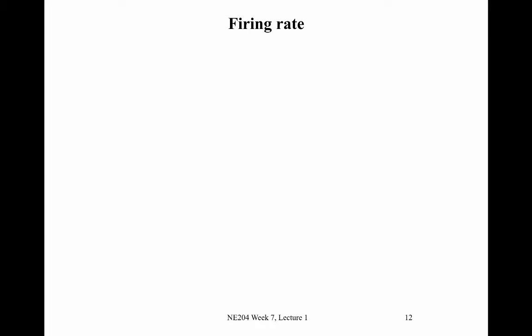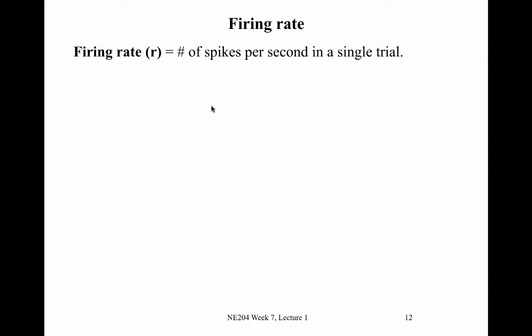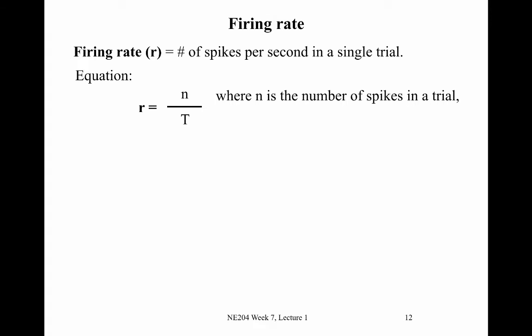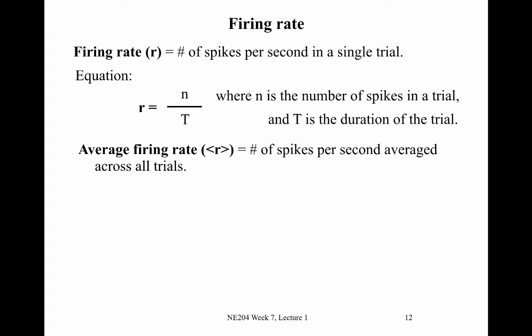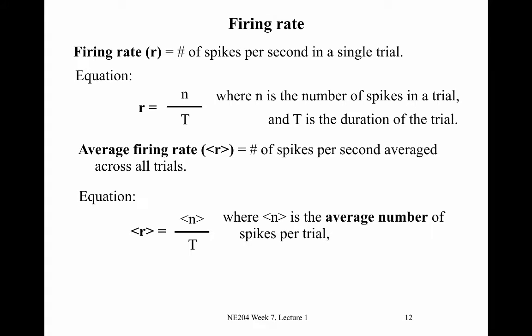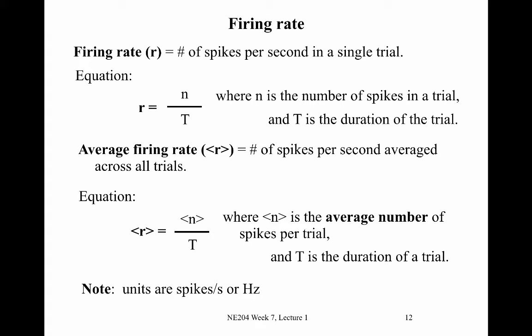The second metric is the firing rate. We define the firing rate, little r, as the number of spikes per second in a single trial: r equals little n over big T, where n is the number of spikes and T is the duration. We also define the average firing rate, written as r in angular brackets, equal to the average number of spikes per trial divided by the total trial duration T. The units for firing rate are spikes per second, or hertz — remember, 1 over seconds is hertz.